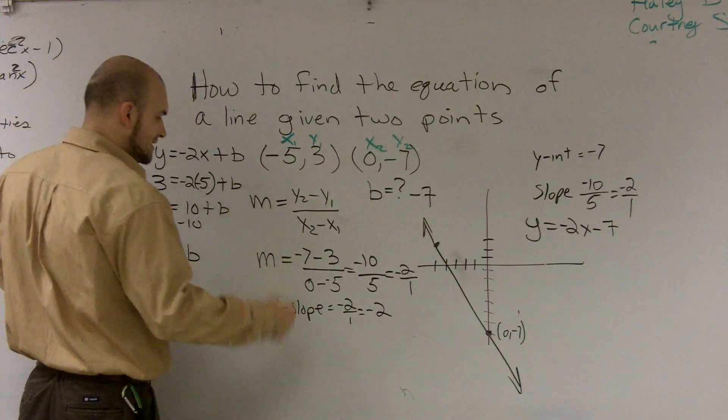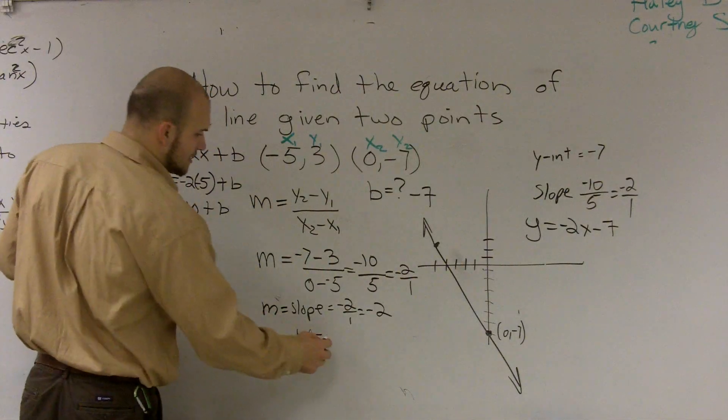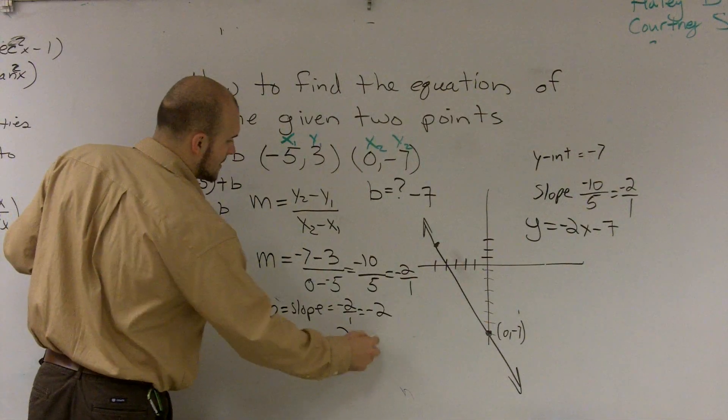So now when I finally want to write this equation, I get y is equal to negative 2x minus 7.